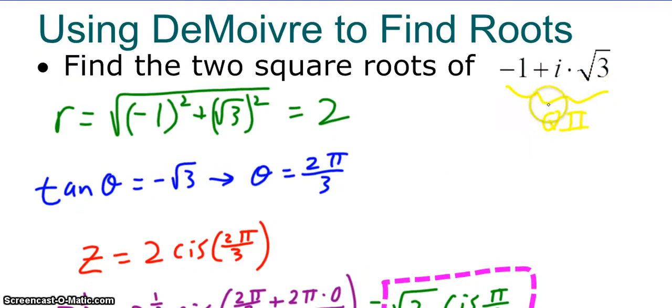So how do I come up with that if you're confused? Well, first we need to find r. So r is the square root of negative one squared plus root three squared, which is two.